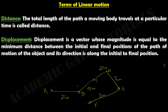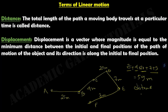The total length of the path is 25 plus 4 plus 20 plus 7 plus 3, which equals 59 meters. This is called distance, and it is a scalar quantity.